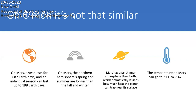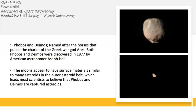The temperature on Mars can range from 21 degrees Celsius to minus 142 degrees Celsius. Mars has two moons known as Phobos and Deimos, named after the horses that pull the chariot of the Greek war god Ares. They were discovered by an American astronomer in 1877. The moons appear to have material similar to many asteroids in the outer asteroid belt, which leads most scientists to believe that Phobos and Deimos are captured asteroids pulled in by Mars's gravitational pull from the asteroid belt between Mars and Jupiter.